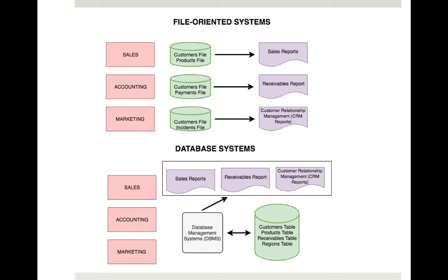The main disadvantage of this approach is that there is duplication of data, and any change to data contained in one file is not automatically propagated to other systems, which may result in inconsistencies. In a database system, each program does not maintain its own data, but fetches the data as needed from a central location where all data for the organization is maintained. This central data repository is known as a database system.